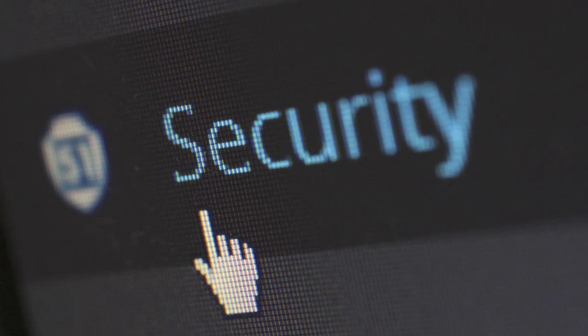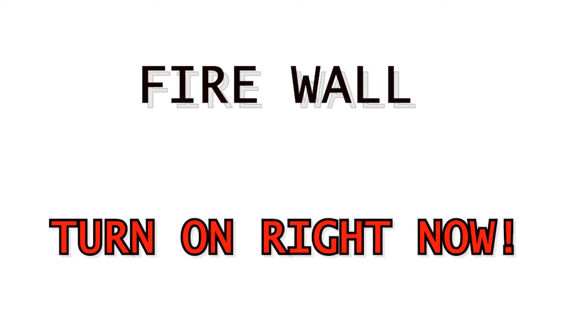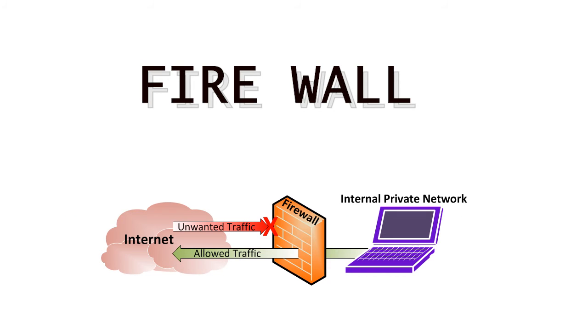So with millions of computers connected through the internet, how do you protect yourself? One thing you can do is have your firewall enabled on your home router — and if you don't have that enabled, you should probably turn it on right now. With the firewall enabled on your home network, only authorized information can be sent and received.